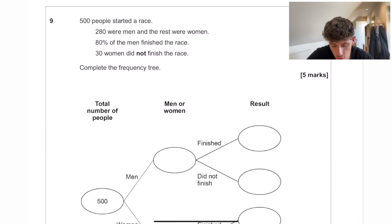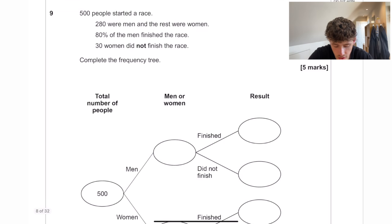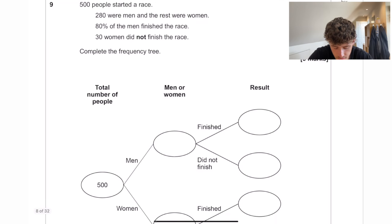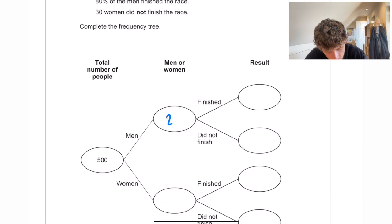500 people started a race. 280 were men and the rest were women. 80% of the men finished the race. 30% of the women did not finish the race. So there's 280 men. That means there was 500 take away 280 is 220 women.